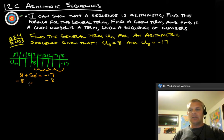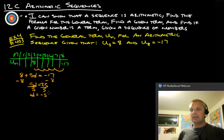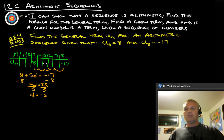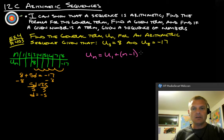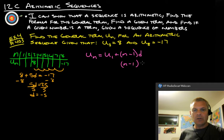and we get that 5D equals negative 25. Divide both sides by 5 and we get that the difference is negative 5. Now that's huge because now that we have the difference, we can actually go back and start plugging stuff into our general term formula. Our general term formula is u_n equals u_1 plus n minus 1 times the difference D. We now know that D is negative 5.